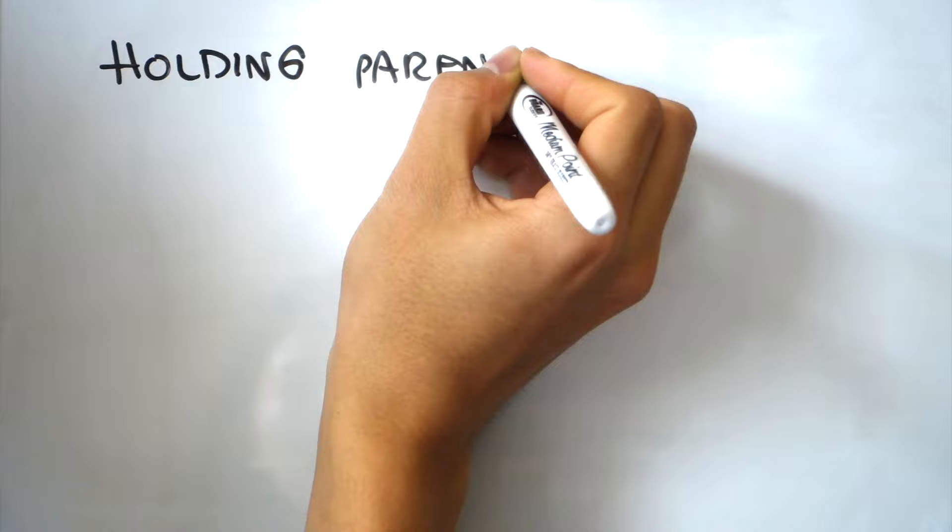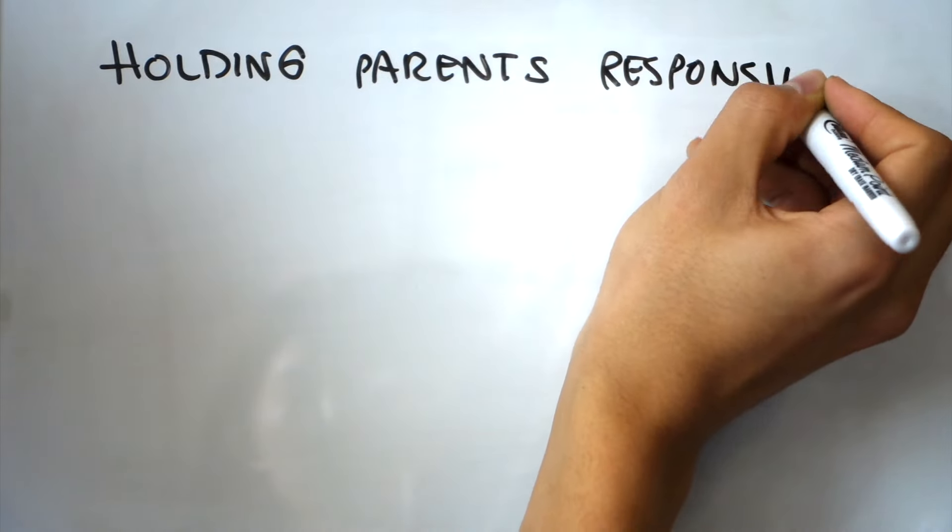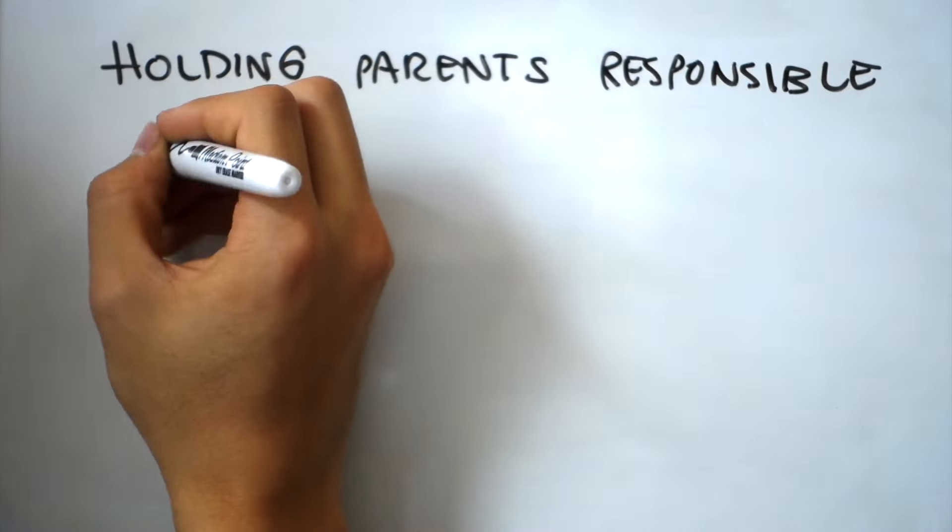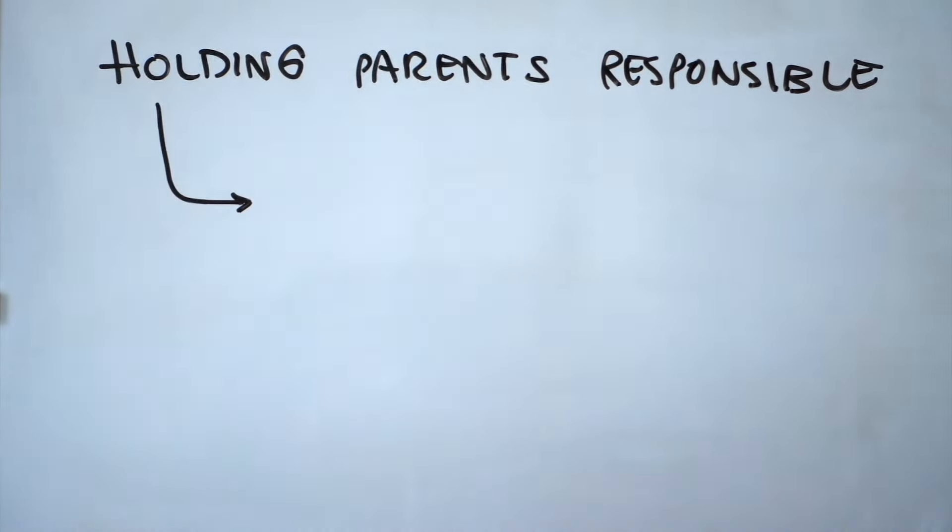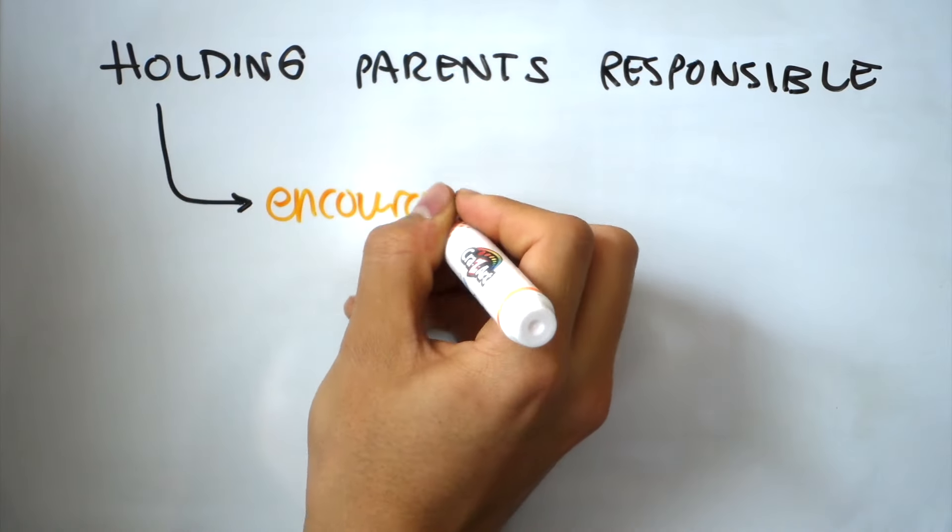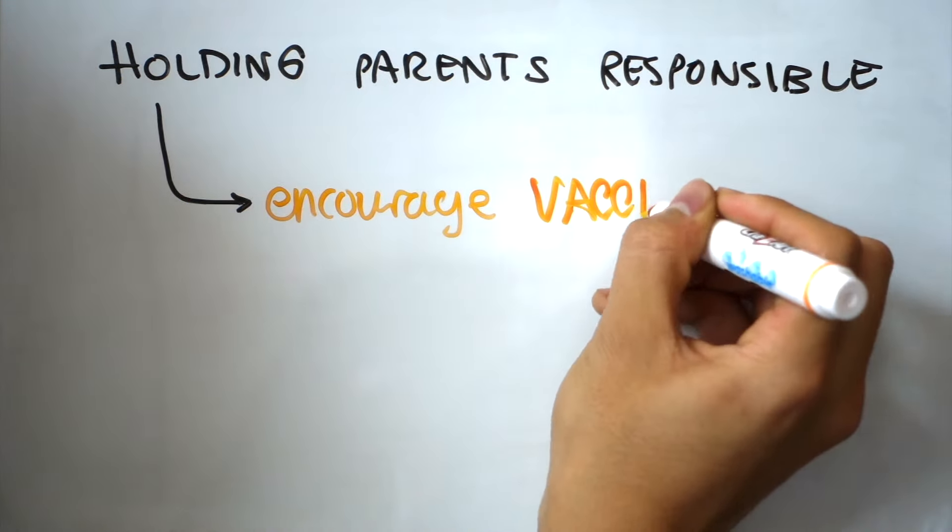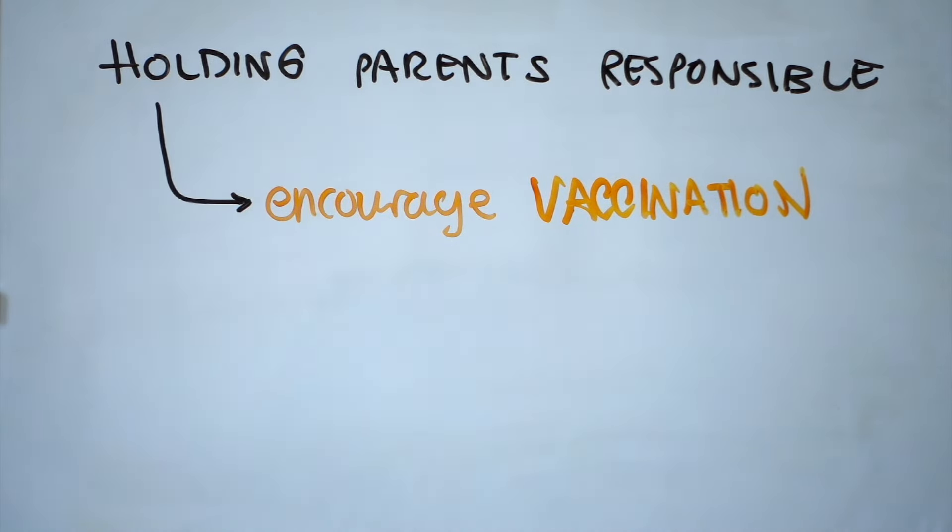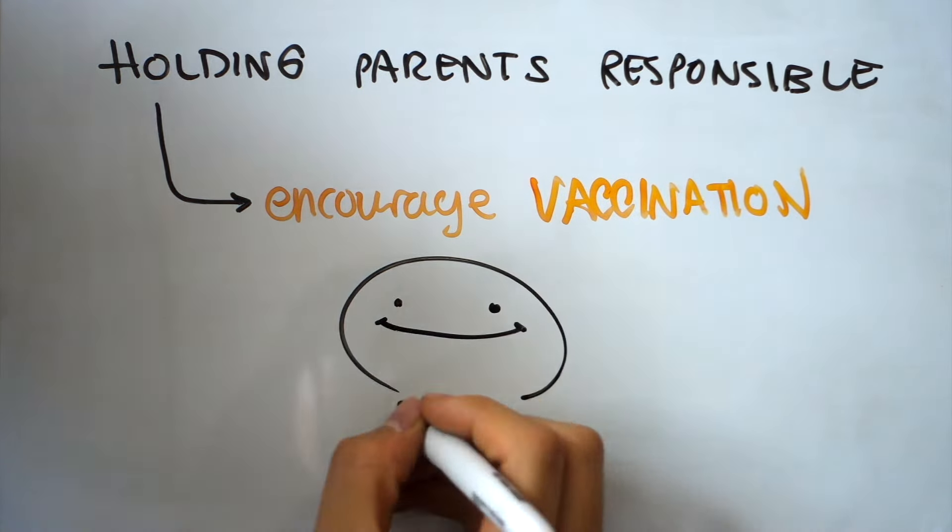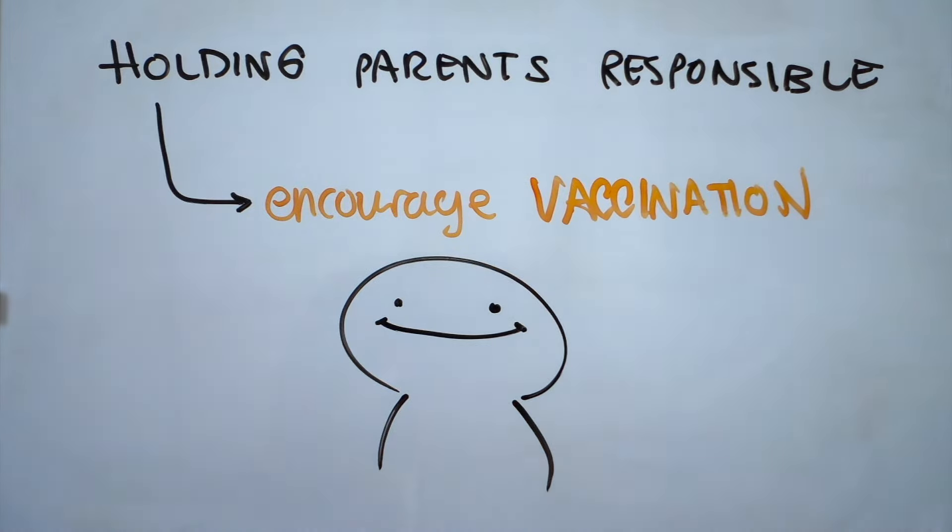One more argument to justify tort liability is that this would help prevent any more cases of harm caused by vaccine refusal. Studies have shown that unvaccinated children are at higher risk of contracting vaccine-preventable disease, and that these children are thus more likely to transmit those diseases to others. Holding parents responsible and forcing them to pay when such harm is caused by their child will encourage parents to include those costs when deciding whether or not to vaccinate.